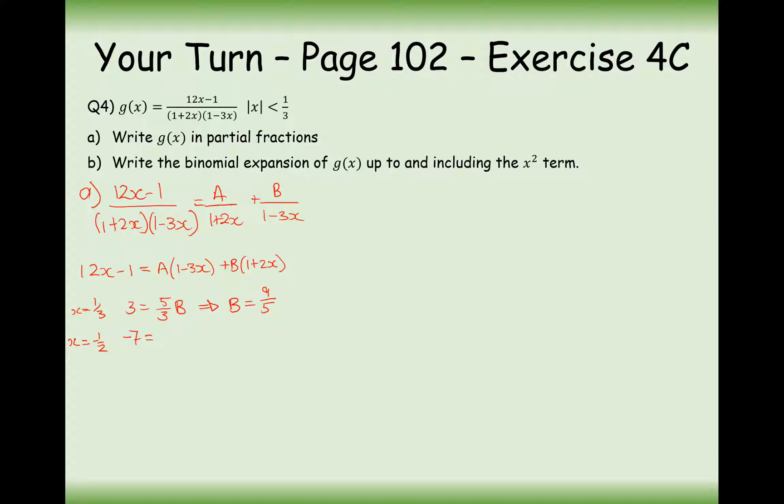So we'll then plus 1, and we get 5 over 2a. So in this case here, a is going to be minus 14 over 5.